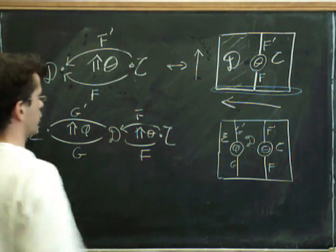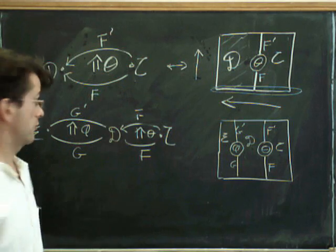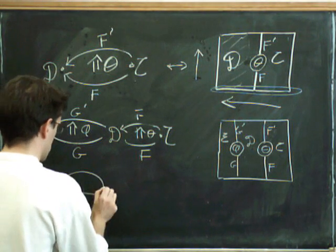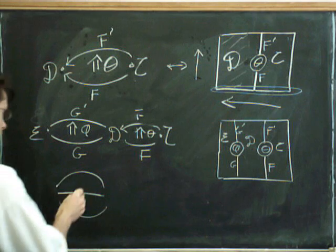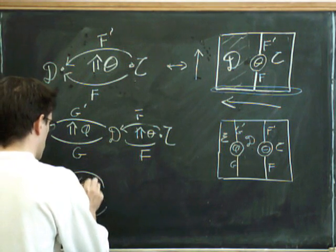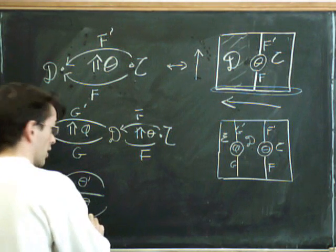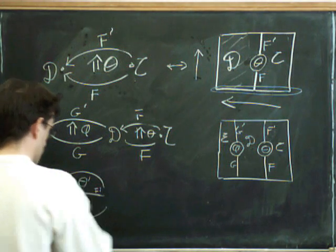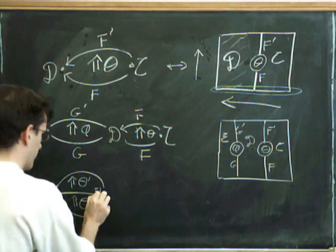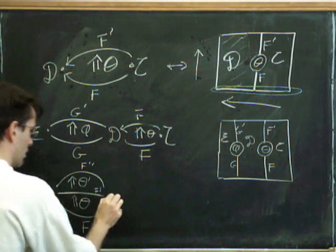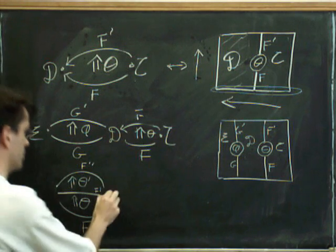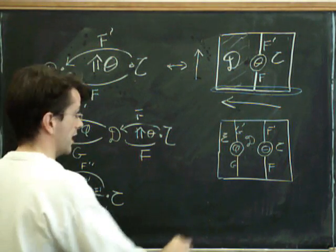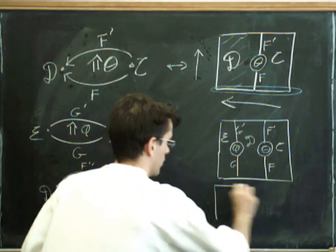This is the composition for the functorial direction. We can also compose in a natural transformation direction. So we can compose two natural transformations. In that case, we would have something like a diagram like this. So we would have theta primed and theta going from... Theta goes from F to F primed, and then theta primed is going from F primed to F primed primed. And so F is supposed to go from C to D.